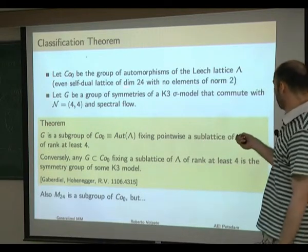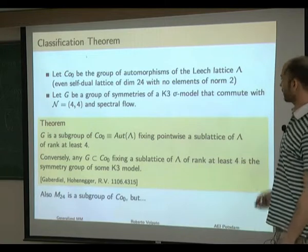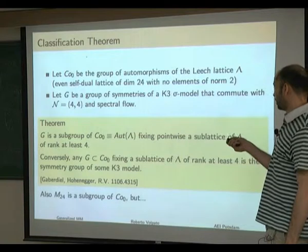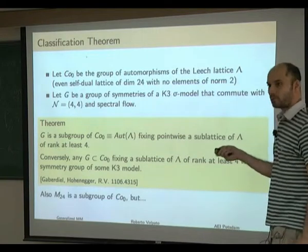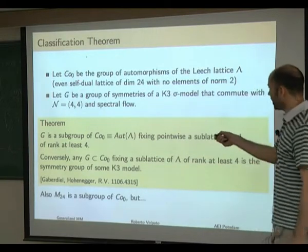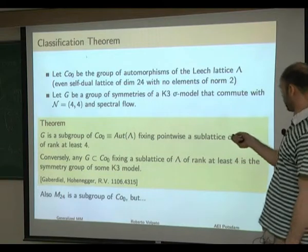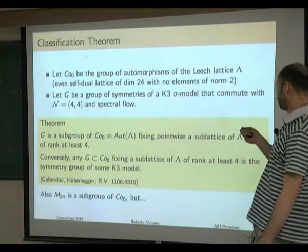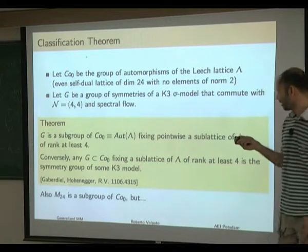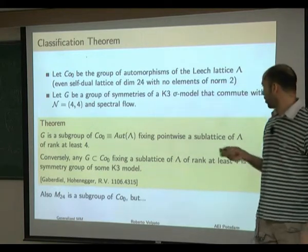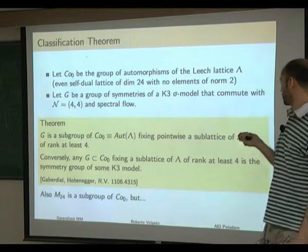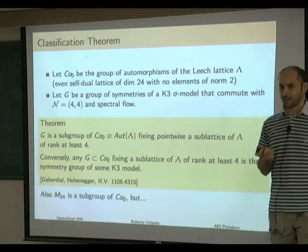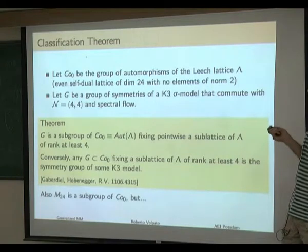Co0 is the group of automorphisms of the Leech lattice. The Leech lattice is an even self-dual positive-definite lattice of dimension 24, characterized among such lattices by having no elements of square norm 2 — that is, no roots.